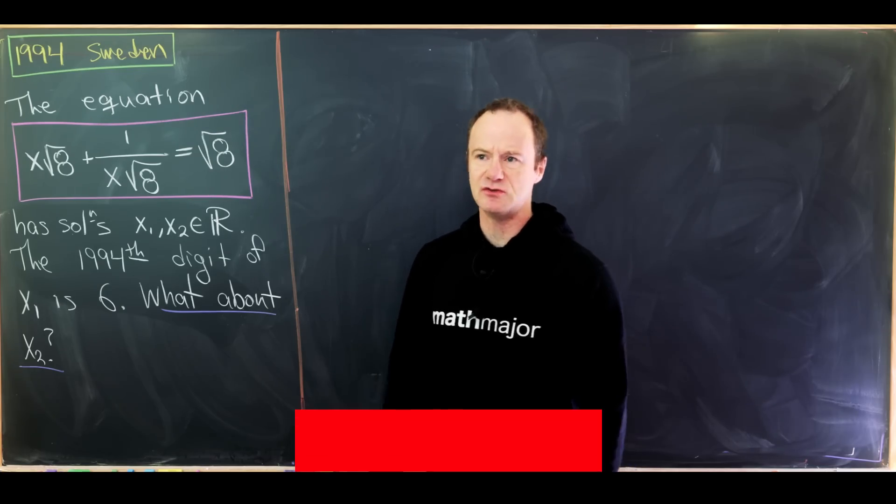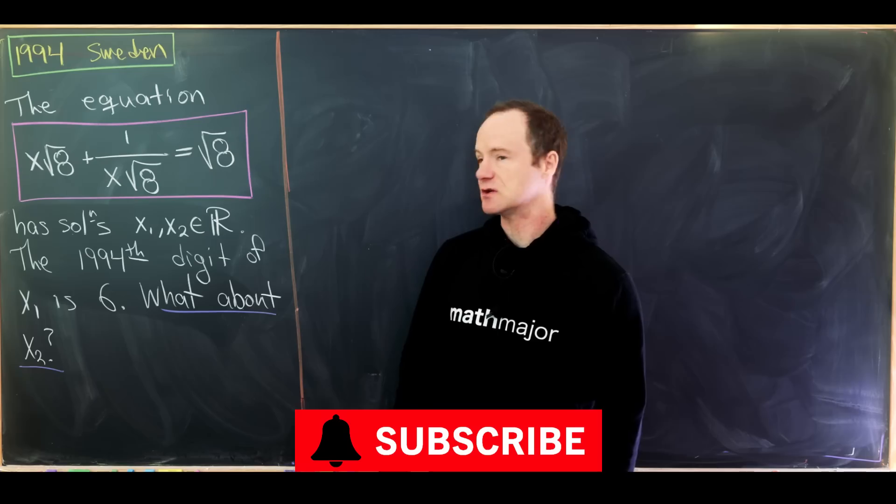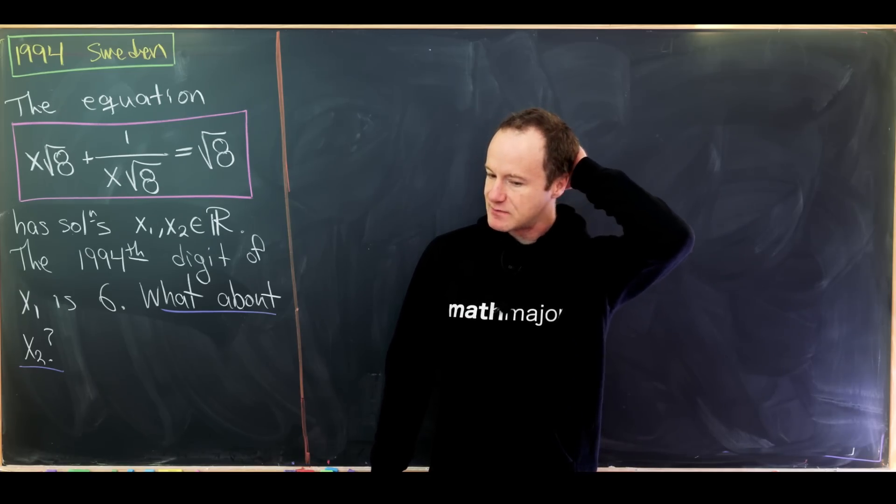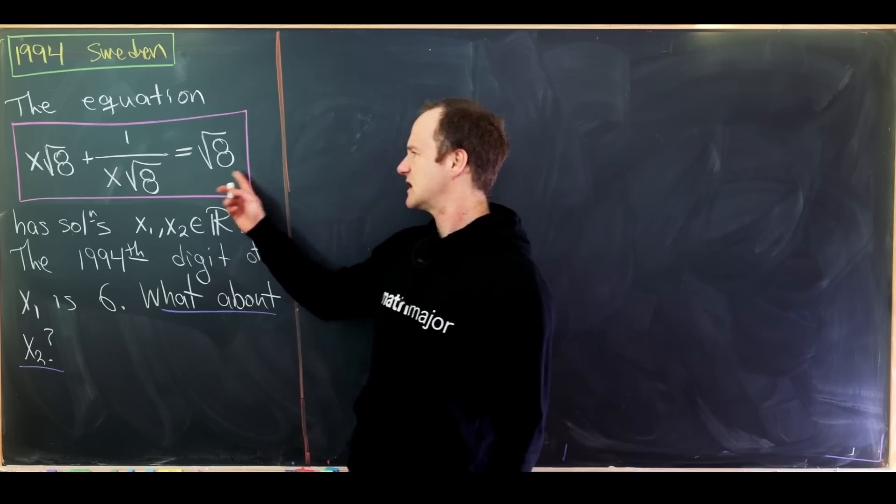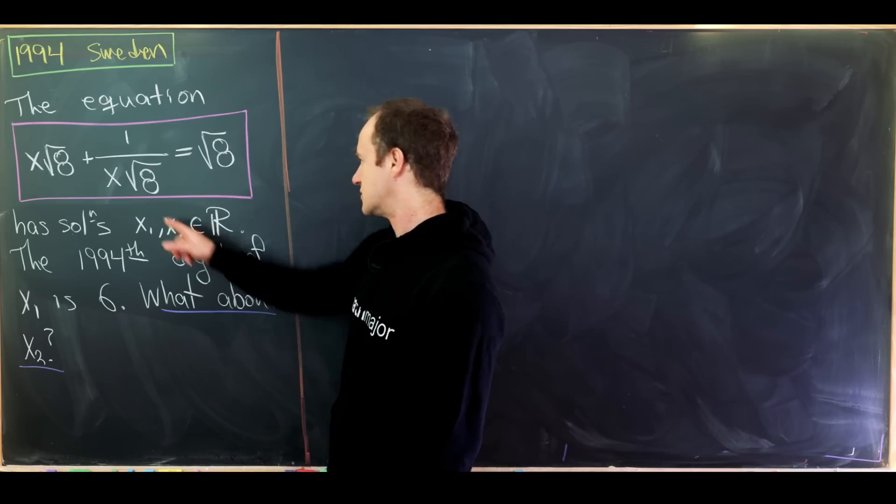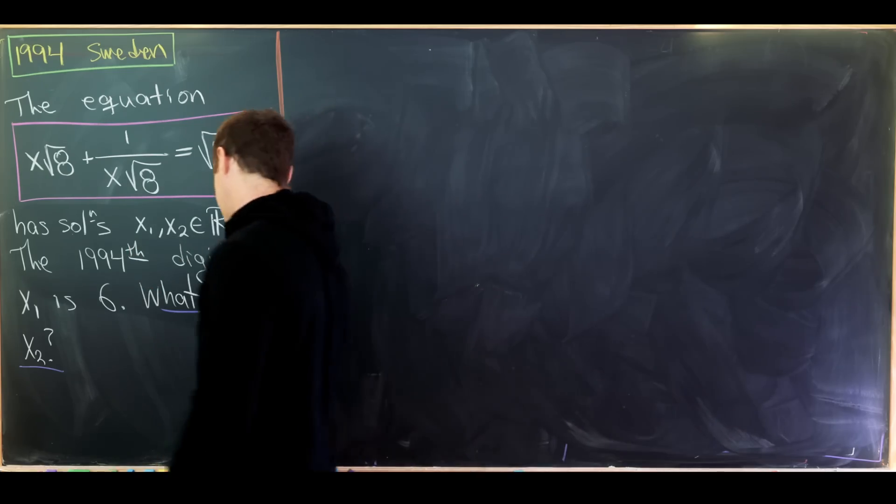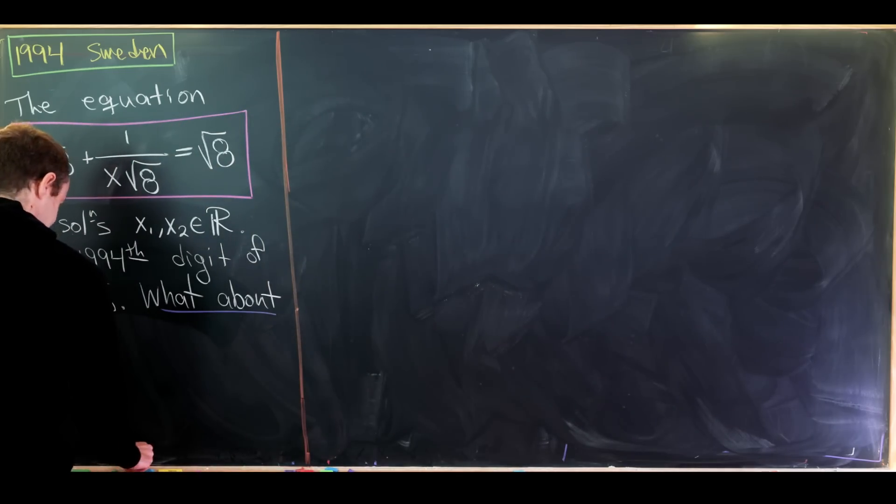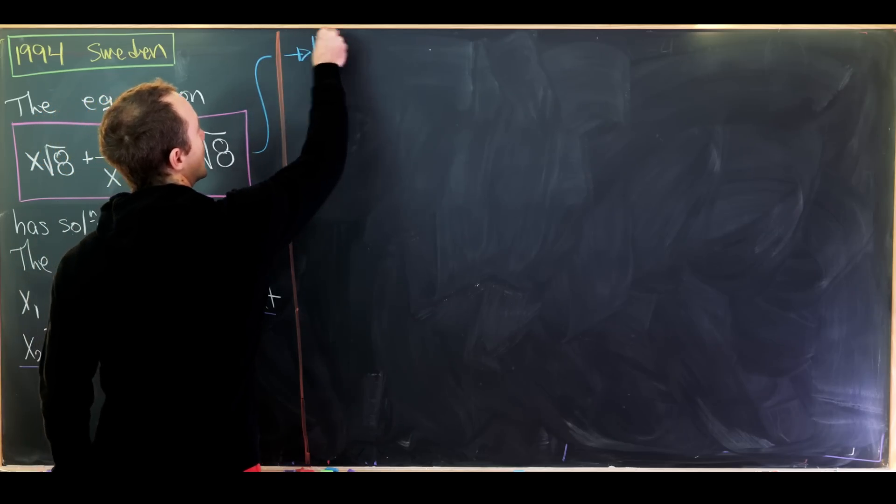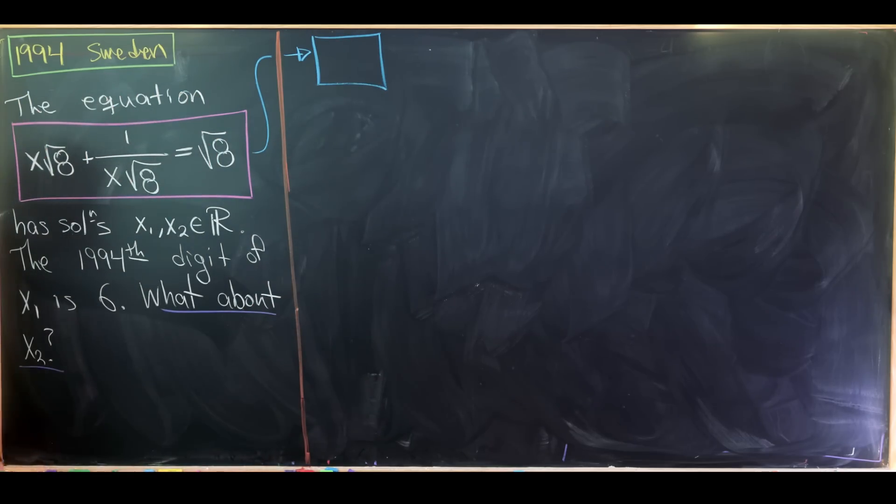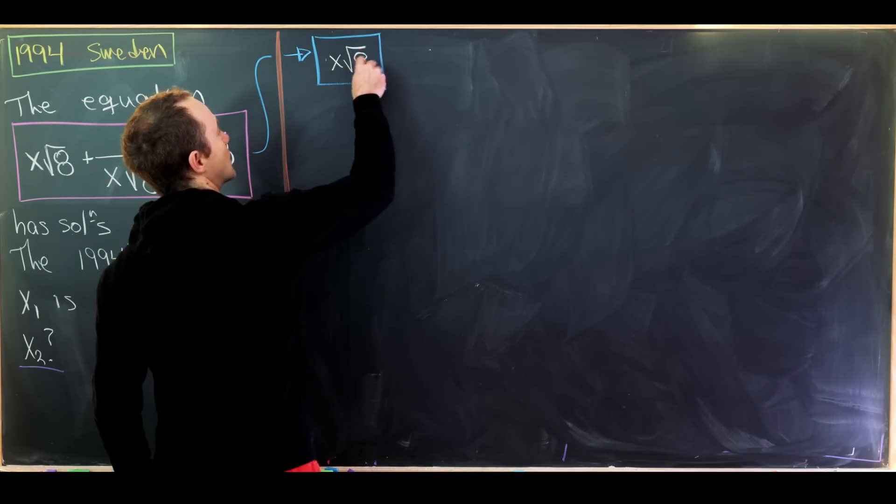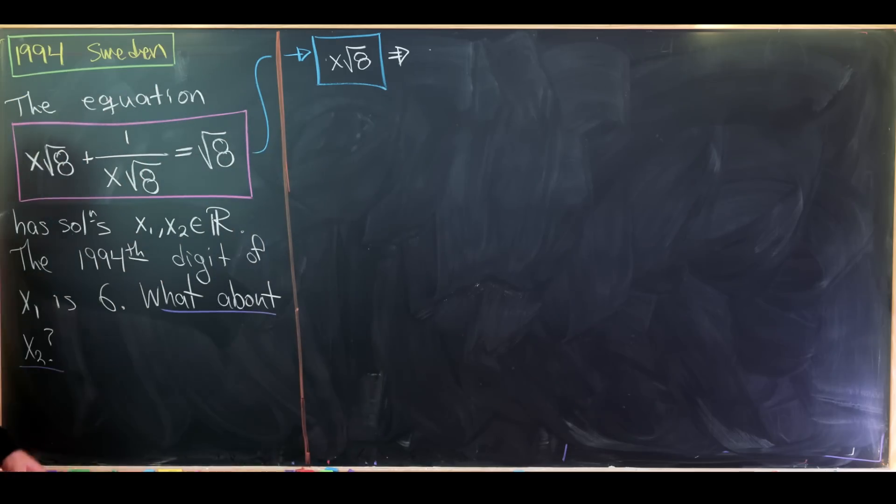What I'd like to do is rationalize this equation. We'll rationalize it and turn it into a polynomial equation. What I mean by rationalize is get rid of this square root of 8 part and turn it into a polynomial equation by getting this x out of the denominator. What we'll do is take this entire equation and multiply it by x times the square root of 8.